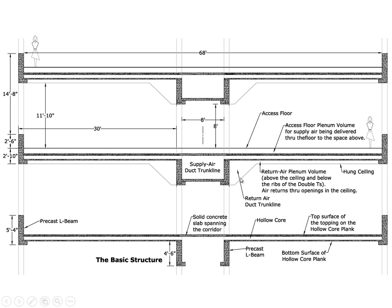Air passes from the supply air trunk line up into the plenum volume and flows south to supply that space and north to supply the other space. We're supplying air low and taking it out in the plenum volume high. With all of that, we've achieved a floor sandwich of 2 feet 10 inches, leaving a floor-to-ceiling dimension of 11 feet 10 inches. Again, we can decide whether to take advantage of this for daylighting or lower the overall story dimension as an economy measure to reduce the cost of the building.